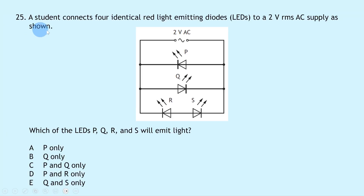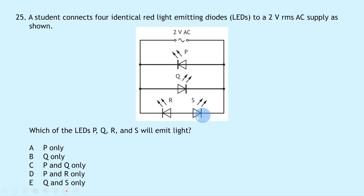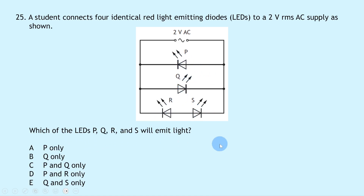Question 25: four identical red LEDs (P, Q, R and S) are connected to a 2 V RMS AC supply. LEDs R and S are in the same branch in parallel, while P and Q each have their own branch. The question asks which LEDs will emit light.